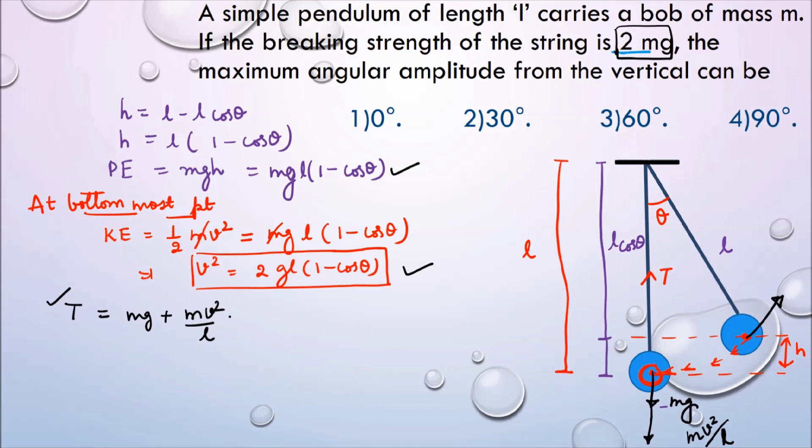So the maximum breaking strength - the maximum tension which the string can withstand is 2 mg. And in order to find maximum angular amplitude, what I am going to do is I am going to take tension as 2 mg. If the tension is 2 mg, then this 2 mg is equal to mg plus mv²/L. Here we can clearly write 2 mg minus mg is mg is equal to m/L v². From the expression in the box, we can write 2 mg = 2gL(1 minus cos θ).